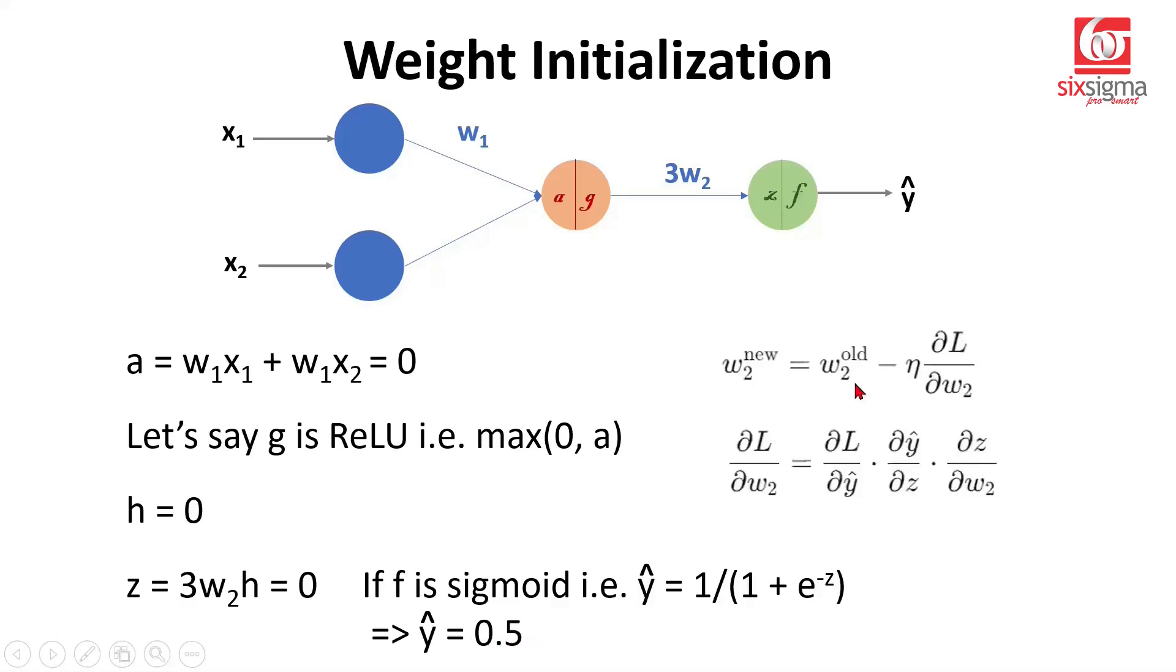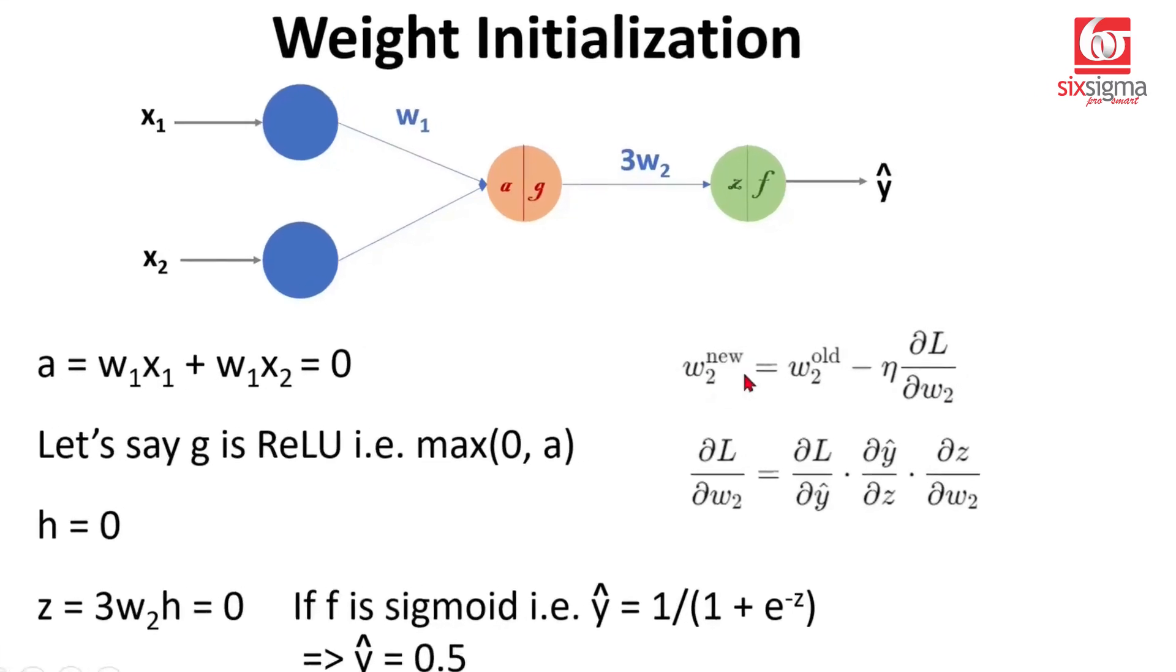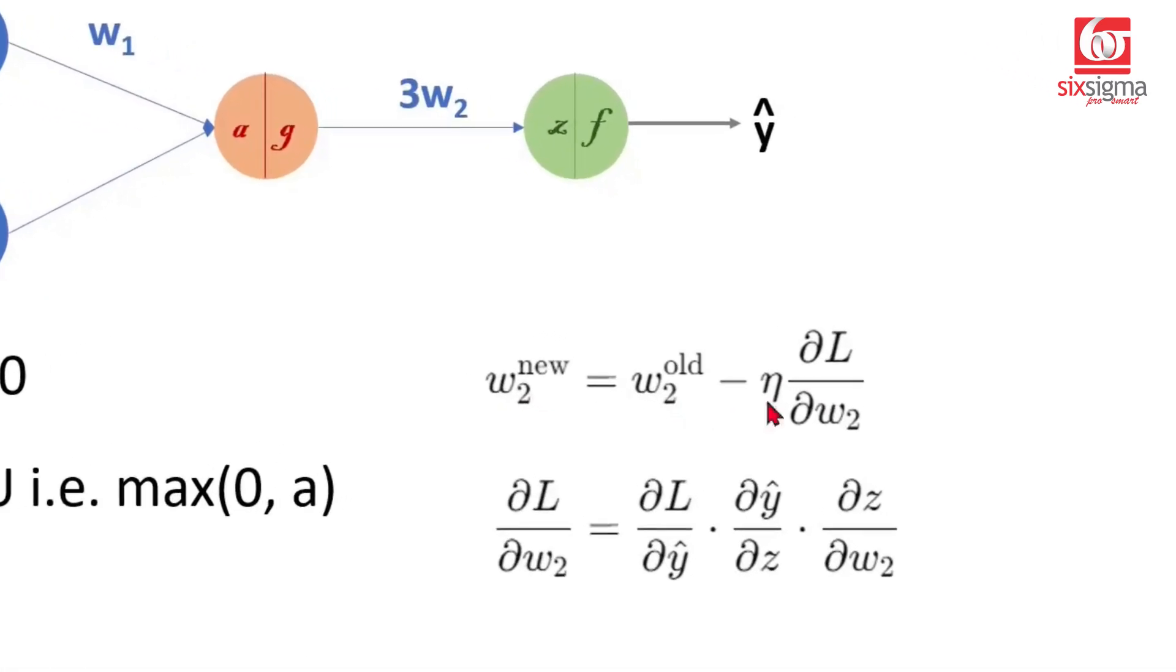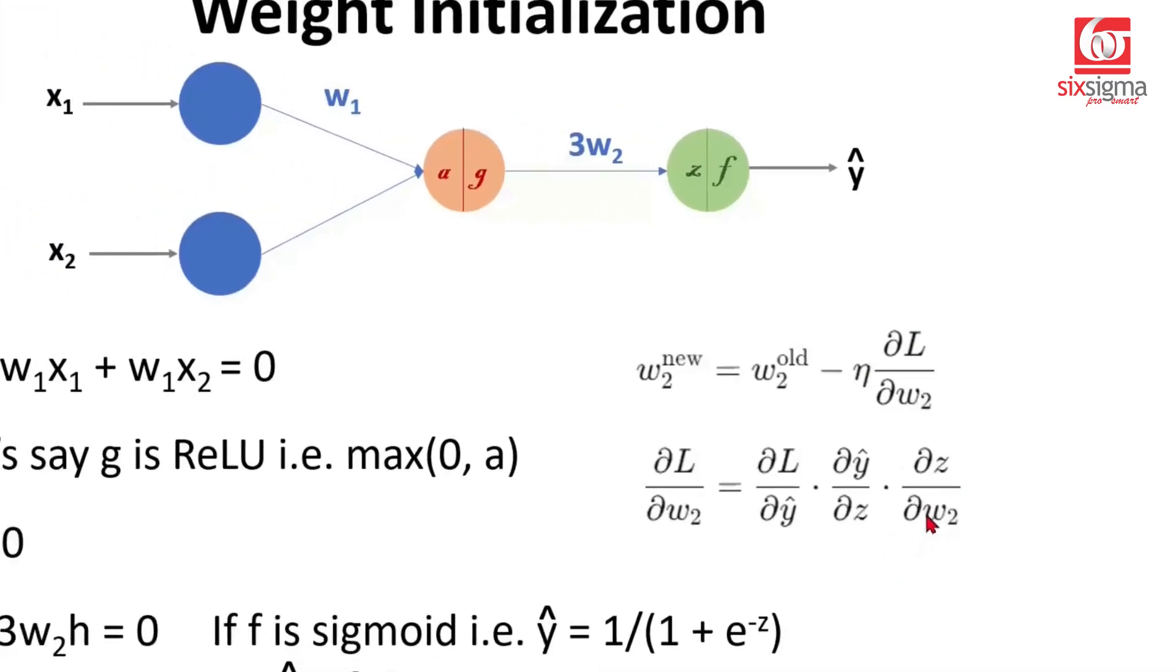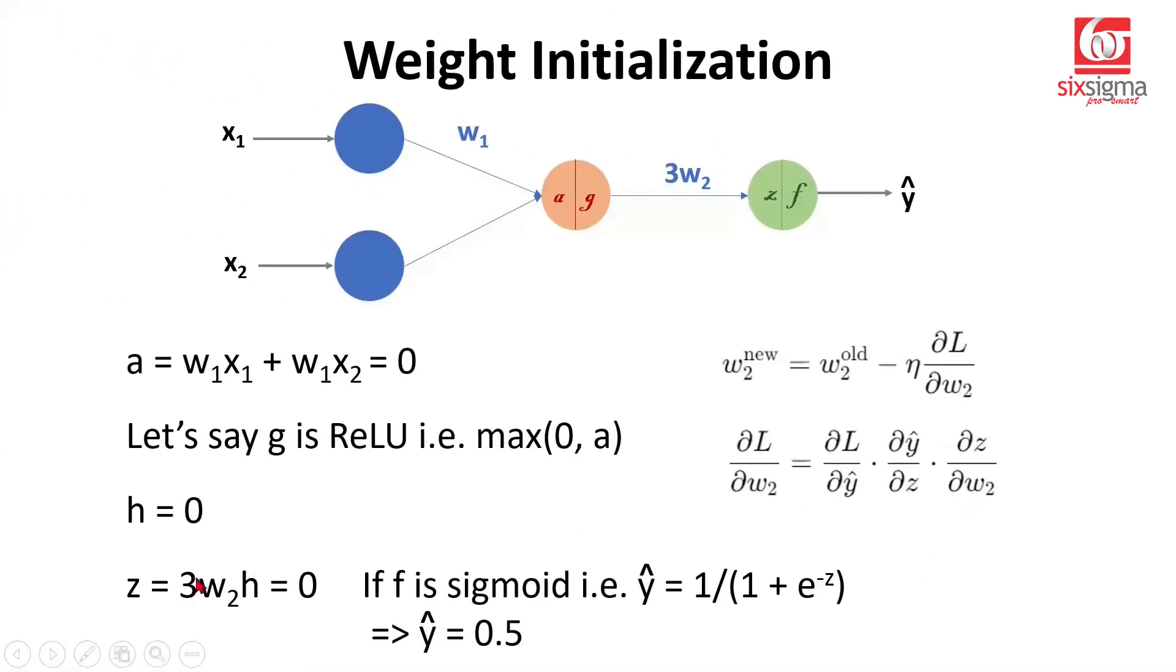And now if we try to go back to update W2, what happens? W2 new would be W2 old minus eta times ∂L by ∂W2. This ∂L by ∂W2 again can be written like this. And let's look at the value of ∂Z by ∂W2. If we take a derivative of Z with respect to W2, it'll be 3H, but H is already zero. So this piece becomes zero. Now in this expression, if ∂L by ∂W2 is zero, it means W2 new is equal to W2 old. So when the weights are all initialized as zeros, the weights don't get updated at all in the first place.